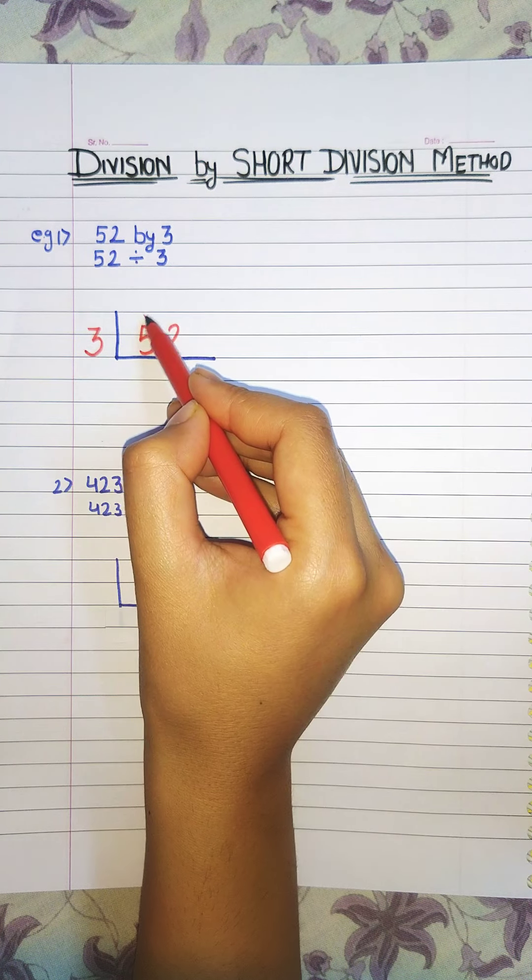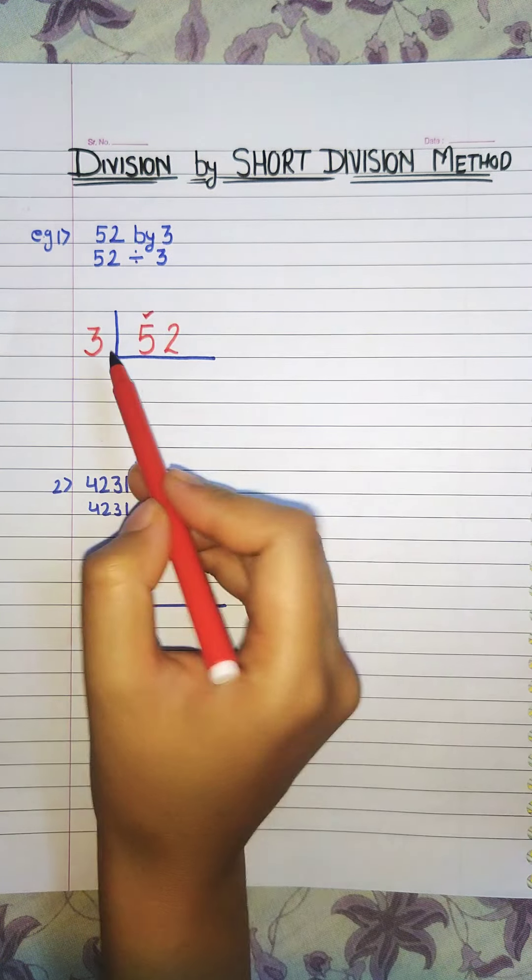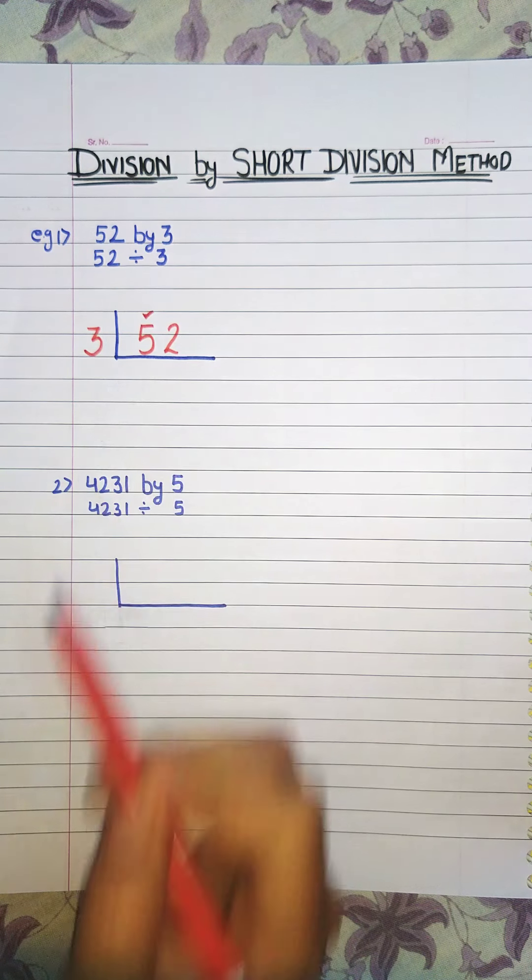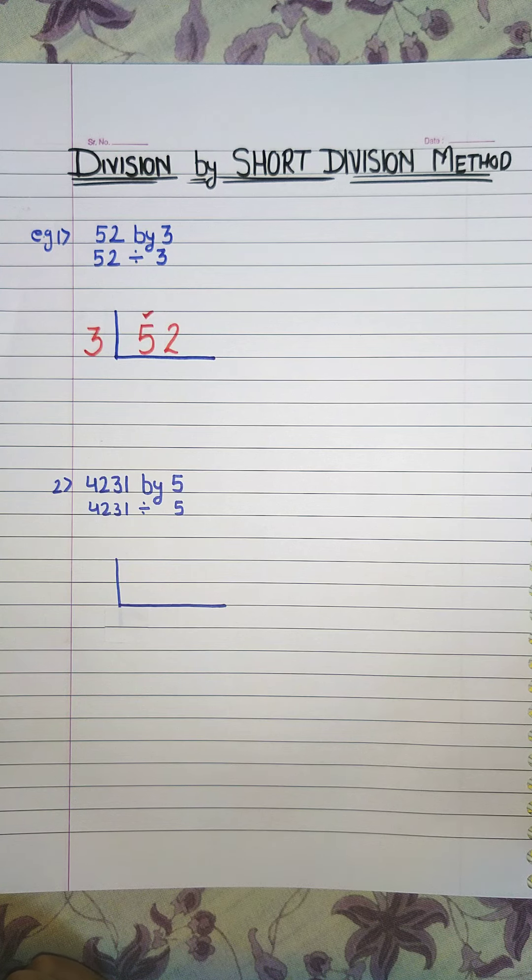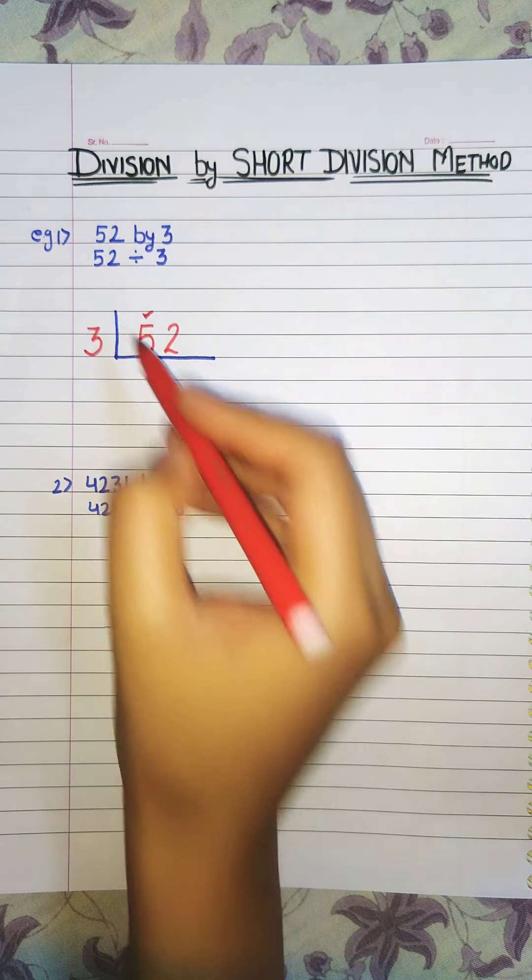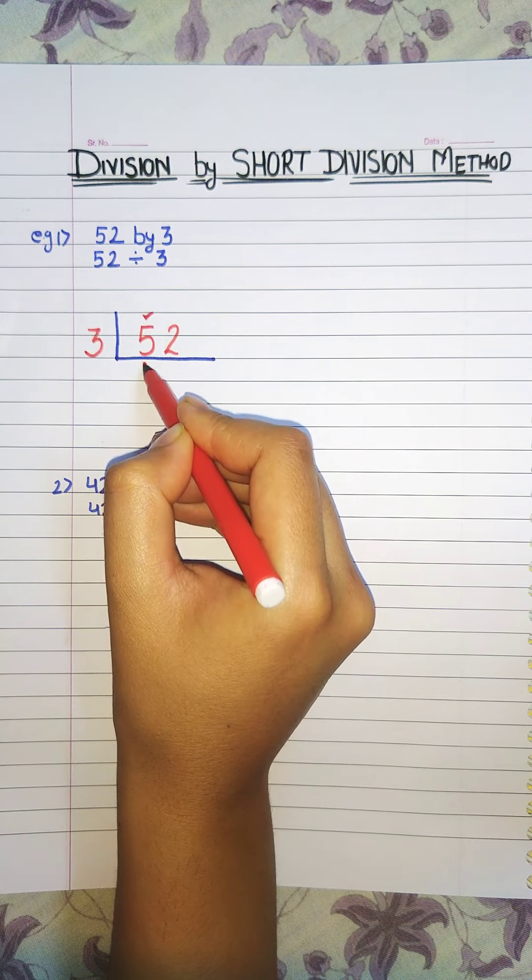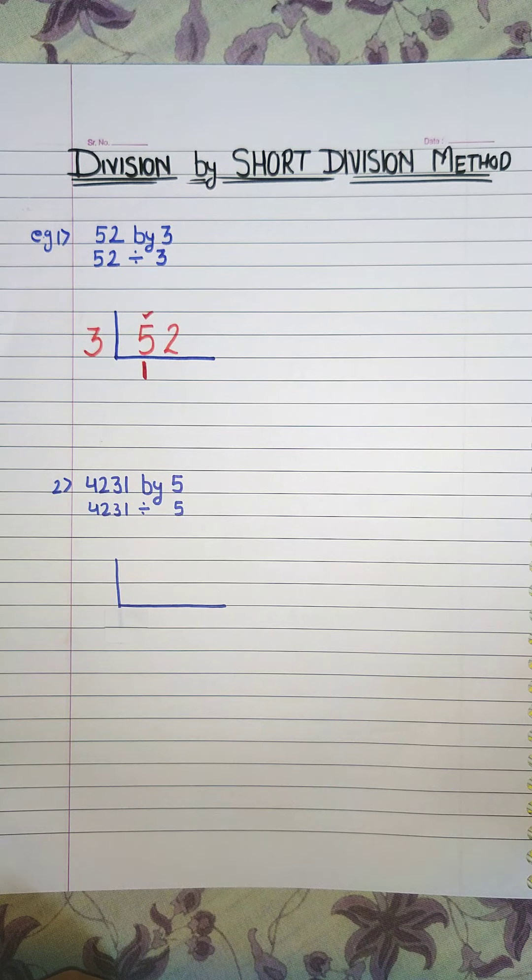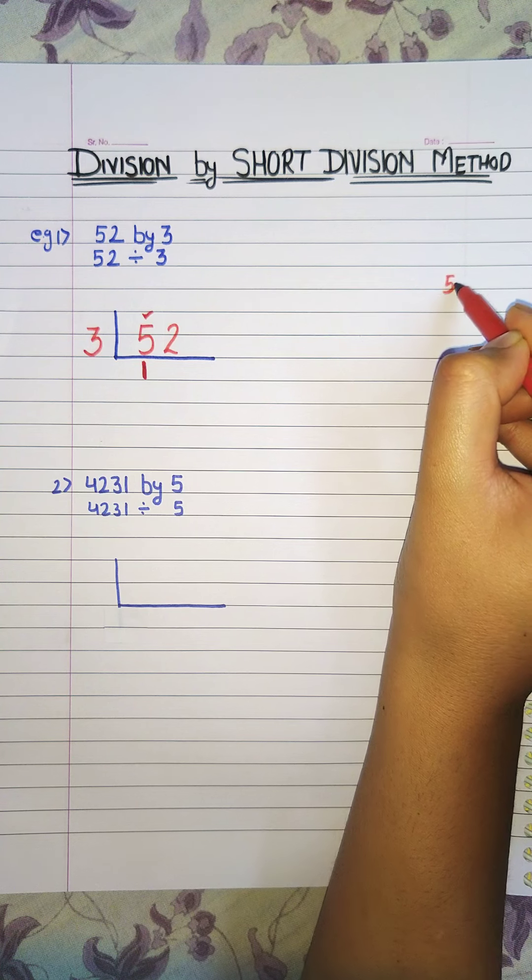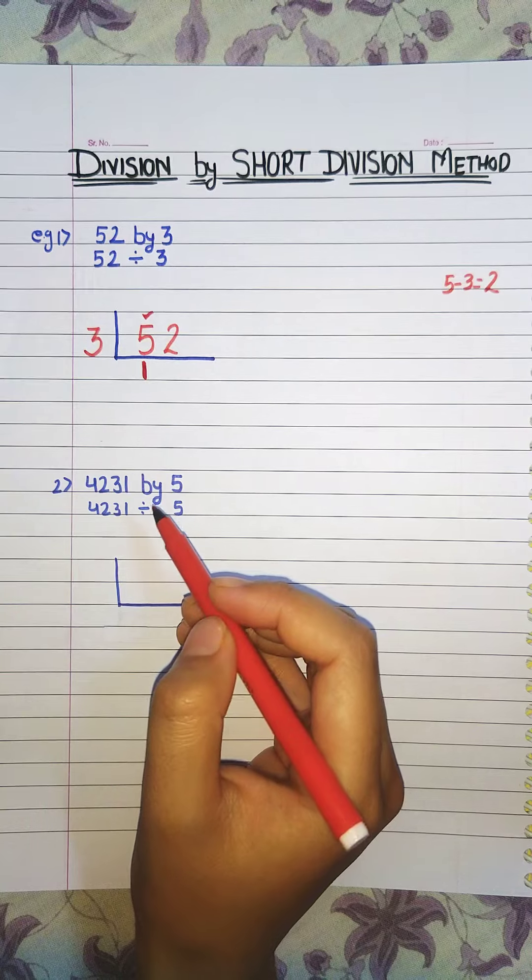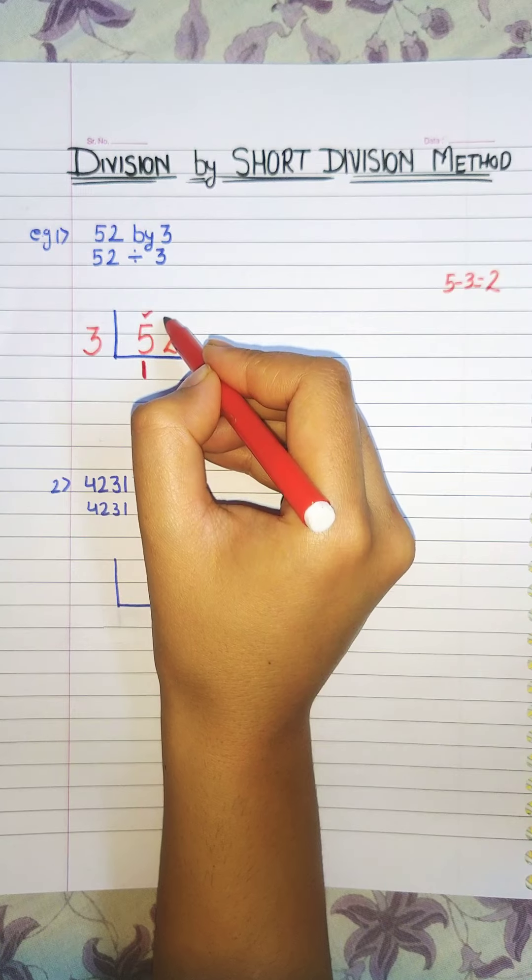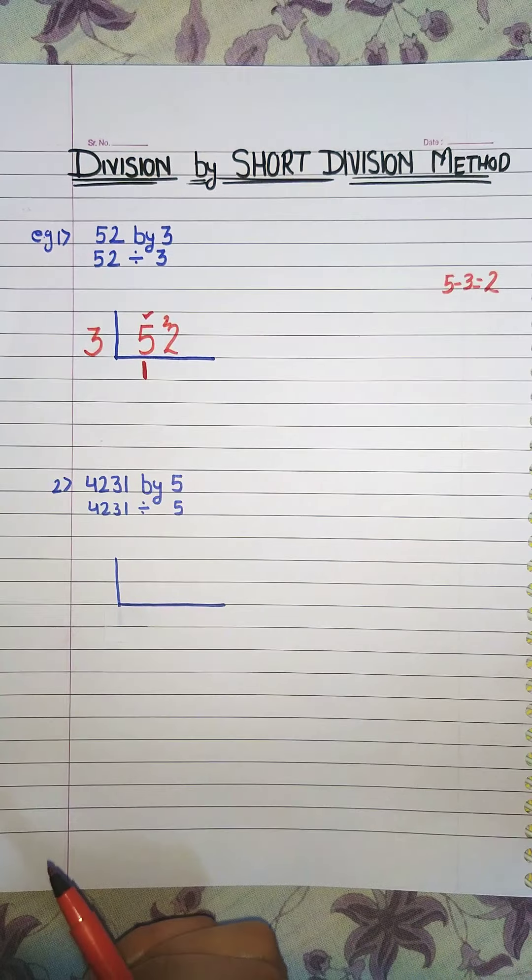Now first we take 5. Since we know the table of 3, we will recite the table till we reach 5. So 3 ones are 3. Now in the mind you will do 5 minus 3. So you will get 2 and 2 is carried to here and it becomes 22.